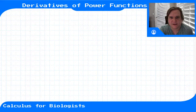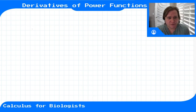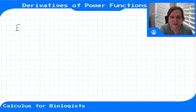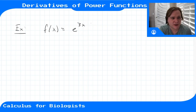Now that we've covered how to take the derivative of an exponential function and the chain rule, we can take the derivative of any power function. Before we get there, let's do a quick chain rule example on an exponential function. Let's say we have f(x) = e^(3x), an exponential function of 3x, and we want to apply the chain rule to find this derivative.